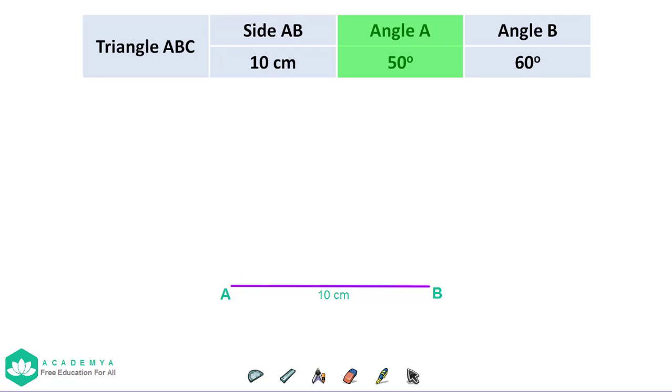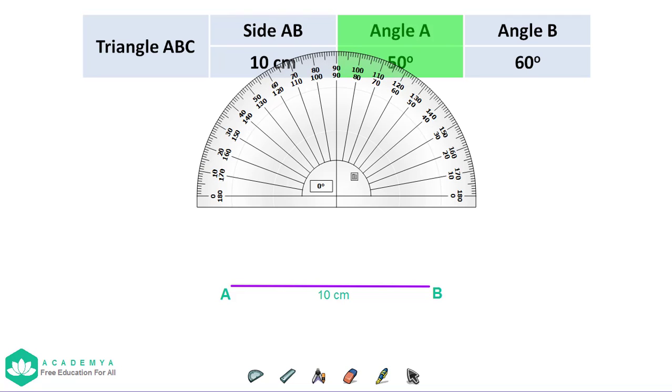Second step, using a protractor, draw the angle A 50 degrees.